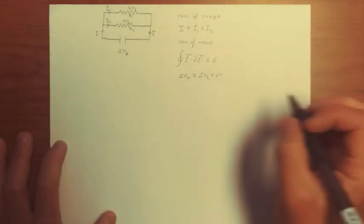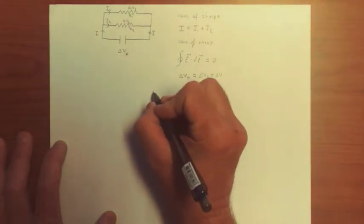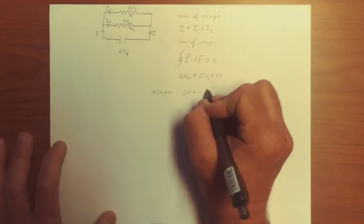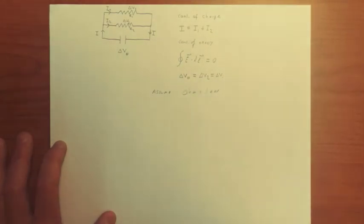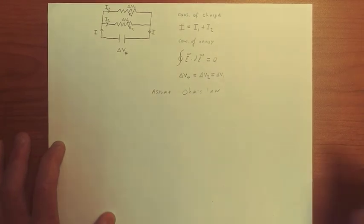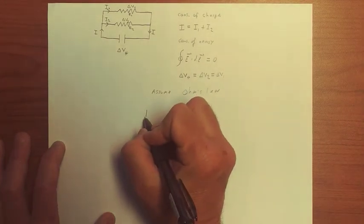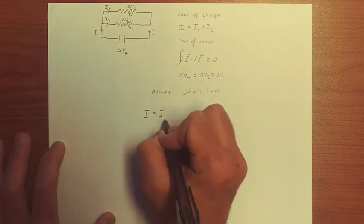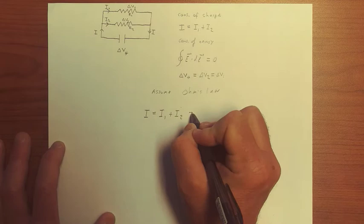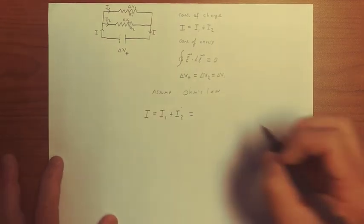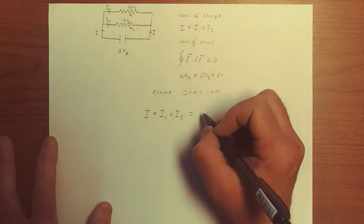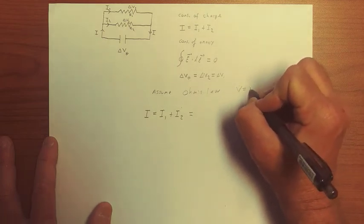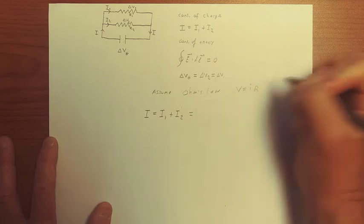And now we assume Ohm's law, so assume Ohm's law is obeyed. And so we have that the current, which is I1 plus I2 is equal to, by Ohm's law, V equals IR. So let's write that here, V equals I times R. So I is therefore equal to V over R.